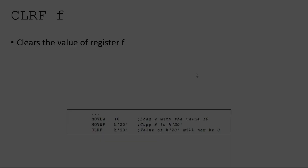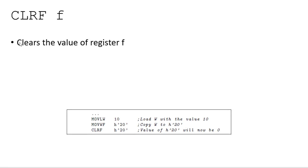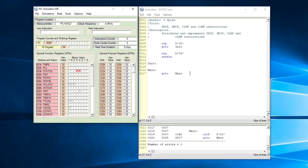The clear file command will load the value zero into the nominated file. The clear file command has only one opcode and that is the file that you want cleared. For example, move literal to W takes the value 10 and loads it into the working register, move WF takes whatever is in the working register and moves it into a specific file location — in this case 0x20 — and then clear file will load zero into that file, clearing the value that was preloaded.